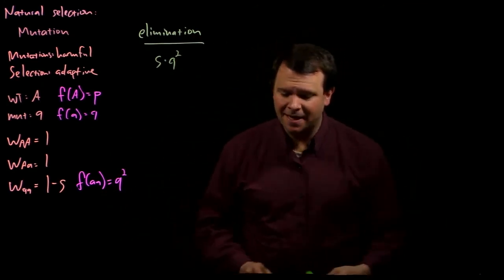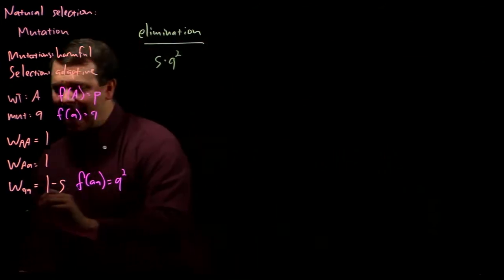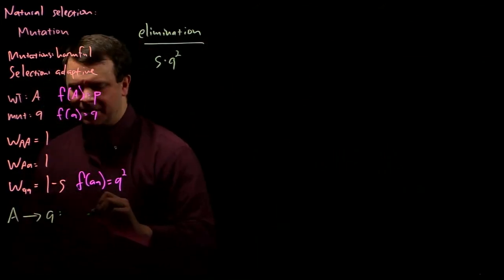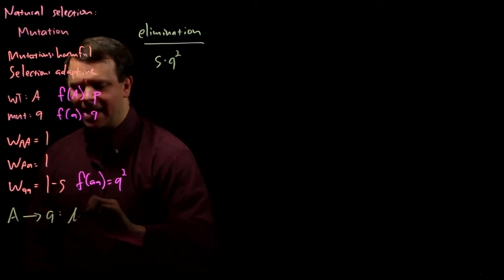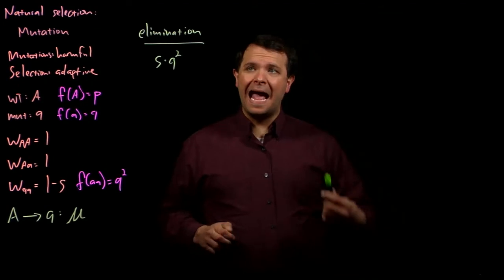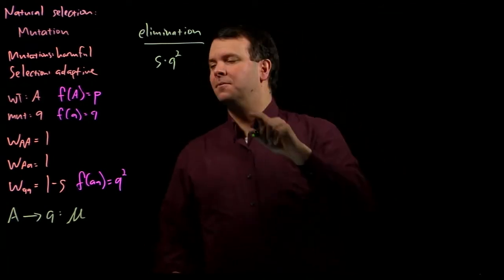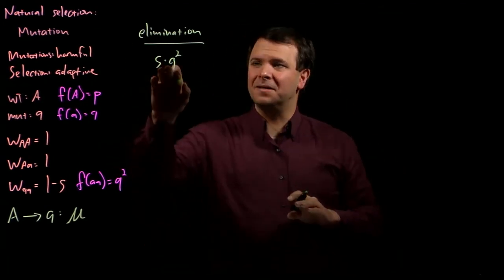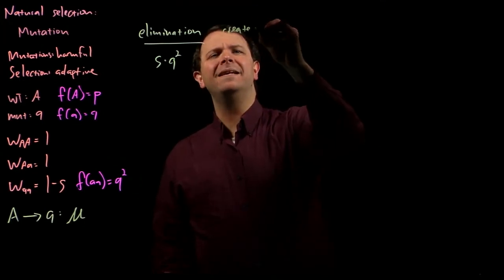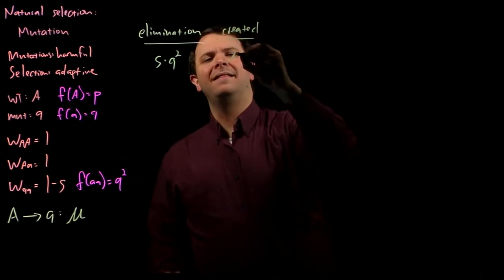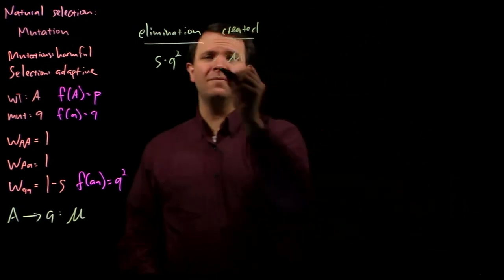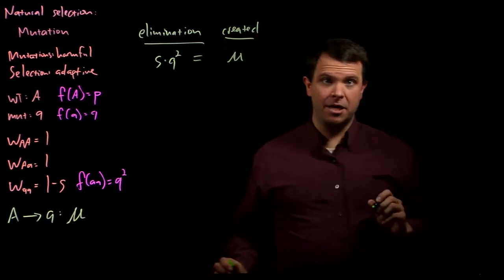However, remember at the same time, big A alleles are mutating to little a alleles at a rate of mu. Little a alleles are being eliminated at this rate, but they're being created at this rate, and at equilibrium, these two rates must be equal.